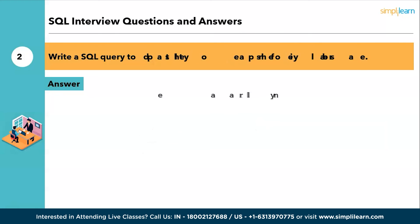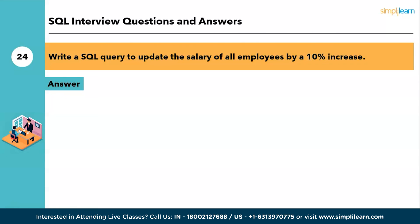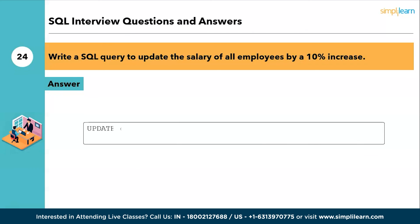The twenty-fourth question: write a SQL query to update the salary of all employees by a 10% increase. You want to multiply the salary by 1.1, which represents a 10% increase. The answer is: UPDATE employees SET salary = salary * 1.1.